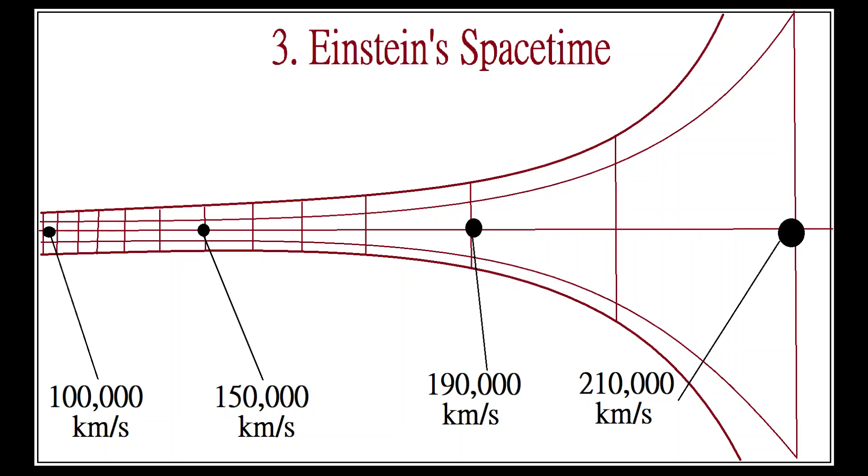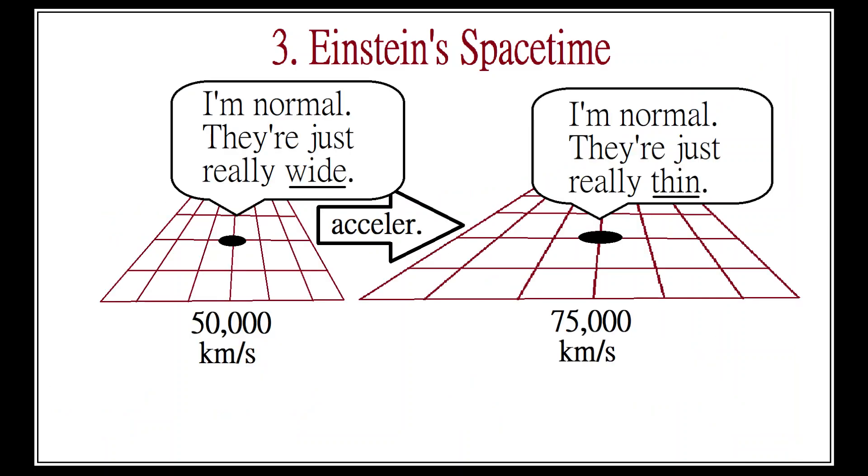As I accelerate, the universe grows longer around me, and things seem to age at a faster rate than me. On the flip side, from a stationary point of view, I would appear to compress in space and age much slower. The upshot is that it gets exponentially harder to cross the necessary distances in enough time to keep up with light.